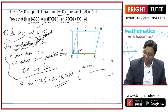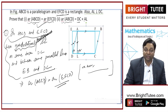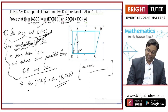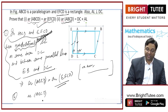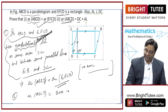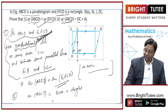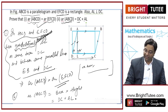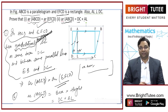AL is also one of the sides of the rectangle, equal to ED, since the angles of a rectangle are 90 degrees each and these two lines are also parallel. Hence AL is equal to ED. Now area of ABCD, which is a parallelogram, is equal to base into height — that is, DC into AL.